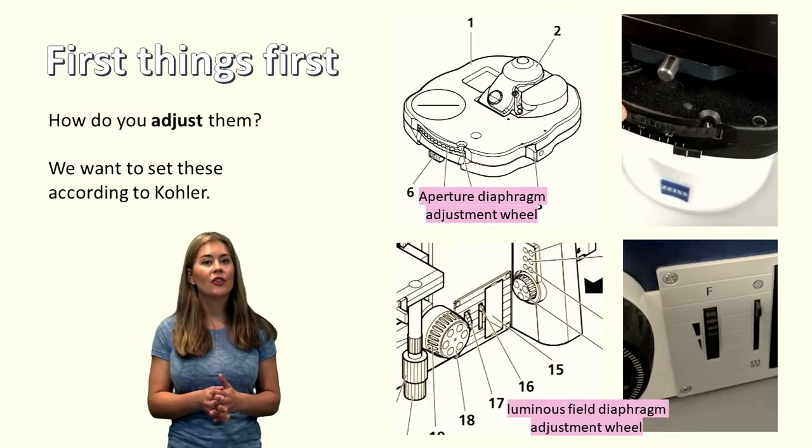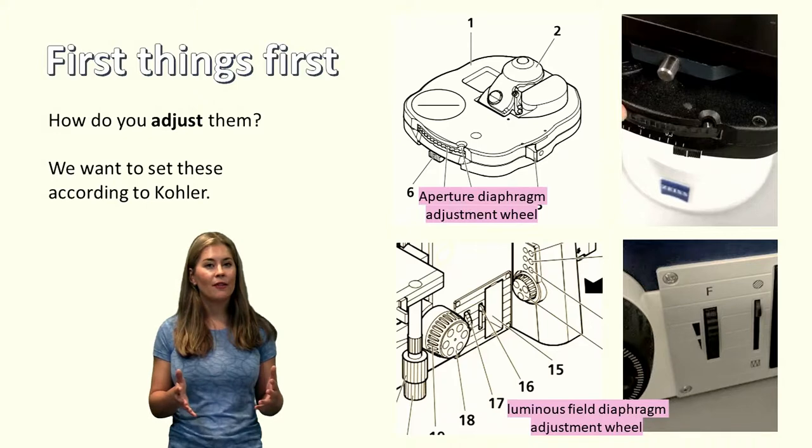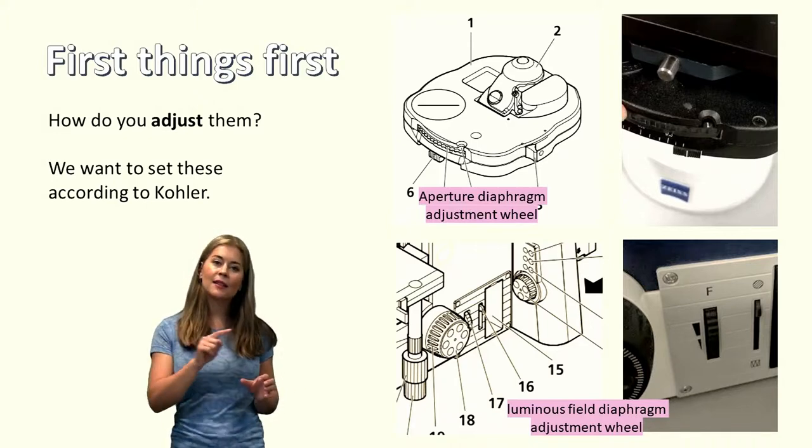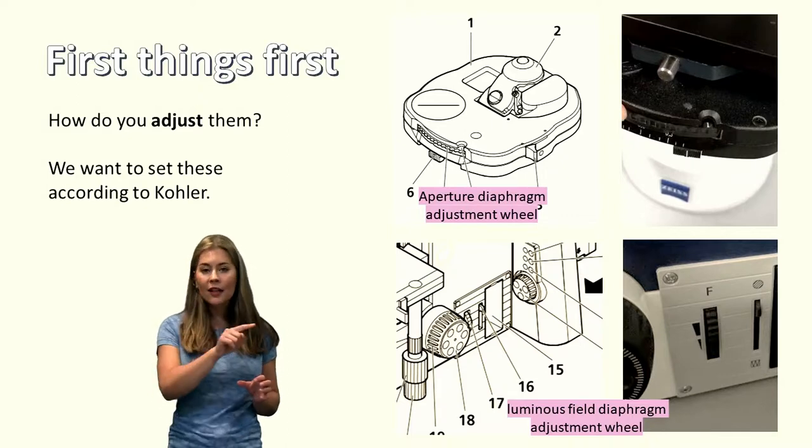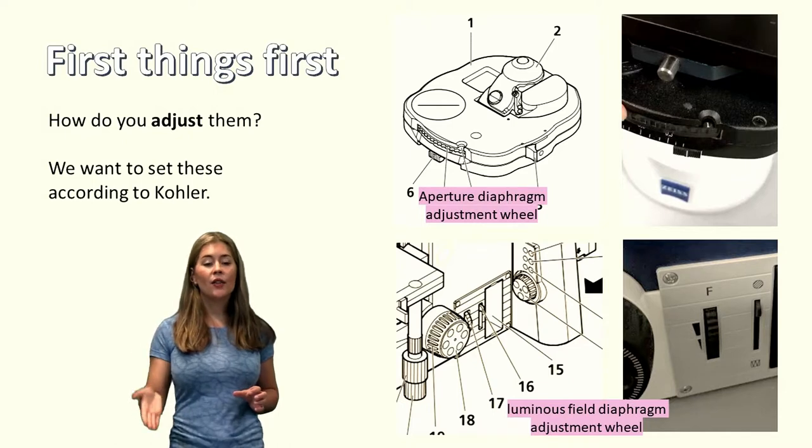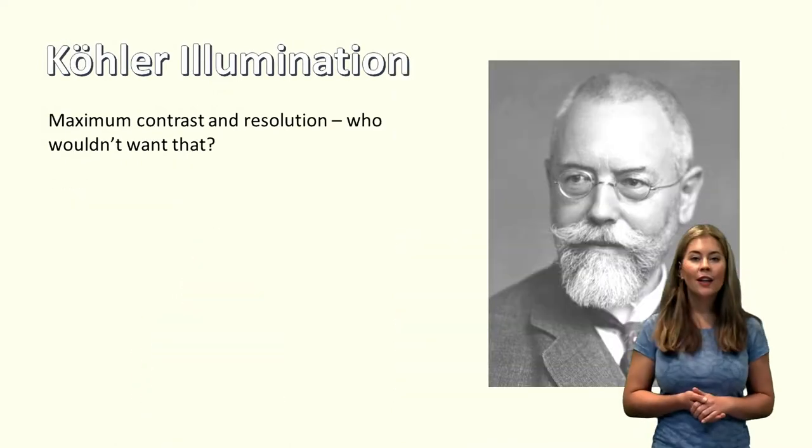Alright, first things first, how do you actually change the aperture of these diaphragms? So with the aperture diaphragm, what you do is there's a little sliding button on the front. And then with the luminous field diaphragm, there's a wheel on the side of the microscope labeled F. And you move it up and down.